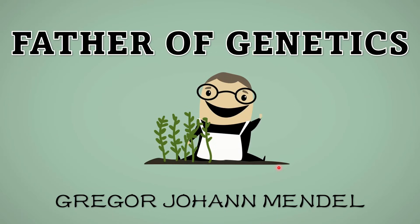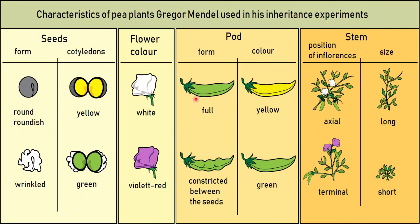Those are the Laws of Inheritance developed by Gregor Johan Mendel — that's why he is considered the father of genetics. Did you know that Gregor Johan Mendel used garden peas for his experiments? These are the characteristics that he tested: the round or wrinkled form of seeds, yellow or green seeds, white or purple flower, full or constricted form of the pod, yellow or green color of the pod, axial or terminal position of the flower, and the long or short size of the stem.